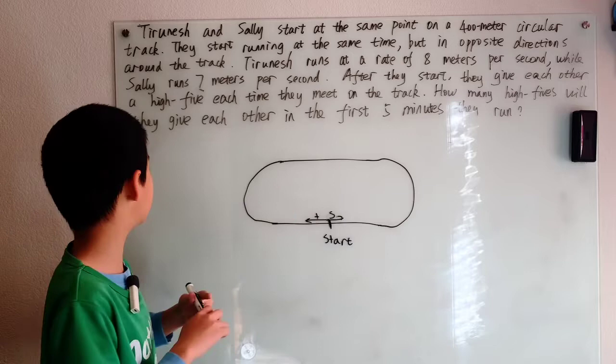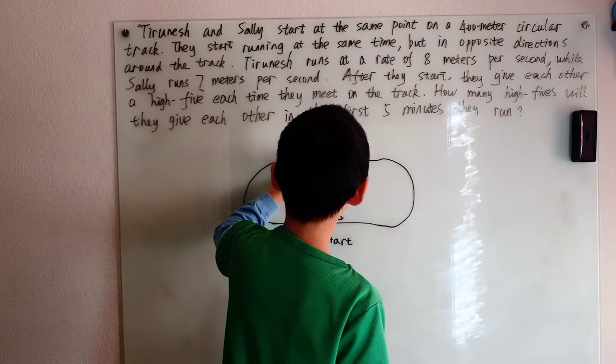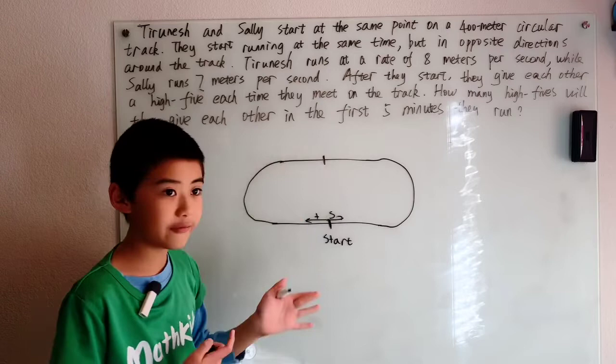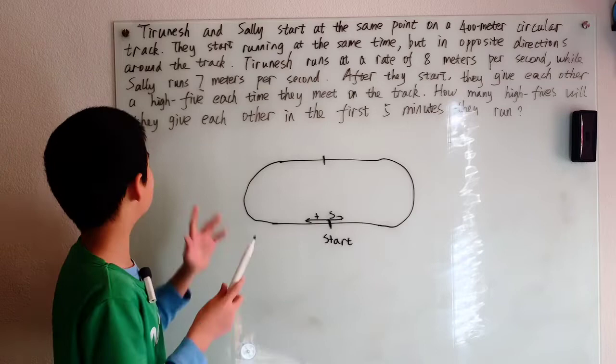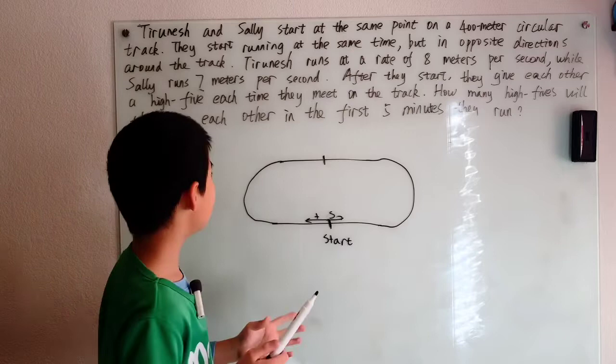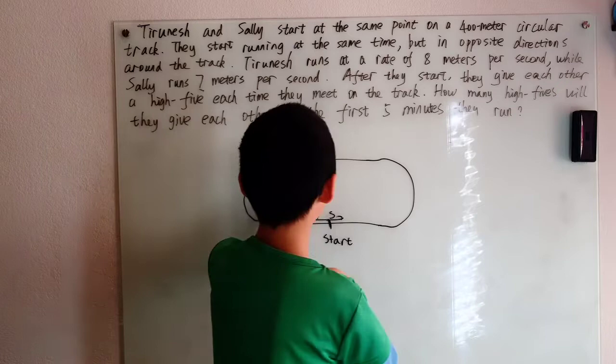Now we can use the same thing here, right? Because if Sally did run at the same speed as Tranish, then when Tranish had ran half the track, she'd be right there, right? She'd be at half the track if Sally ran at 8 meters per second. News flash to you. She doesn't run at 8 meters per second. She runs at 7 meters per second. Meaning Sally is going to be almost at the halfway point when Tranish is at that halfway point, but she's not going to be quite there yet.